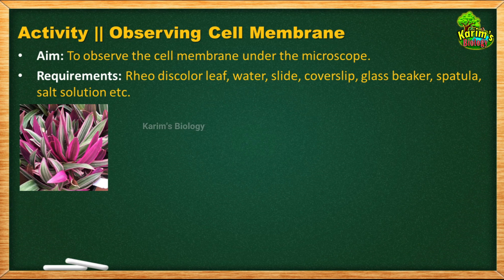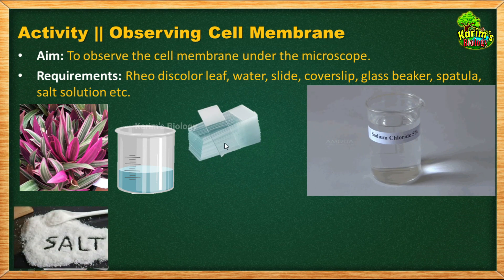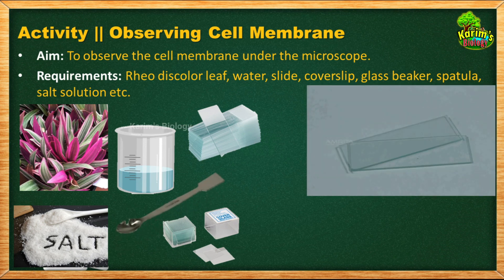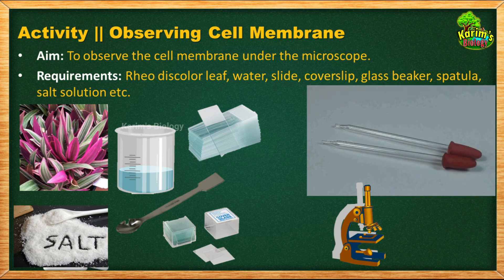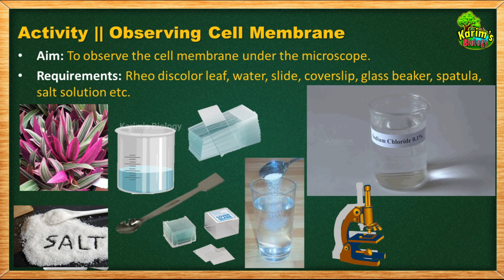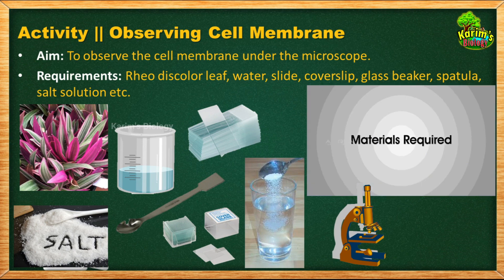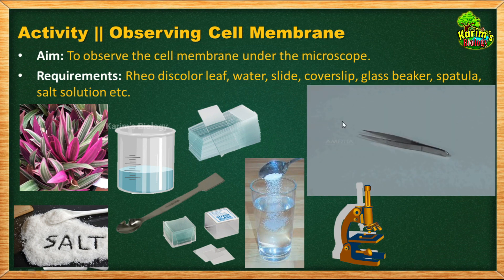Because of the anthocyanin, the lower epidermal cells appear purple. We also require some water, slides, a small amount of salt, a few cover slips, and a spatula to prepare the salt solution. Finally, we need a microscope to observe the specimen. To prepare the salt solution, take 100 ml of water, add 5 grams of salt, stir it well, and that gives you a 5% salt solution (sodium chloride solution).